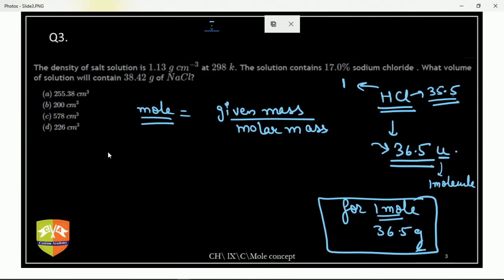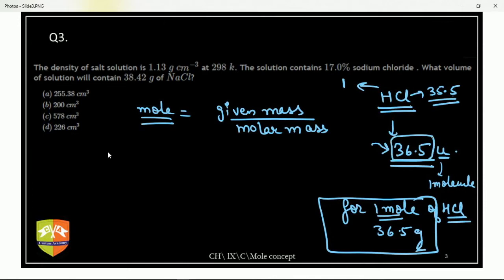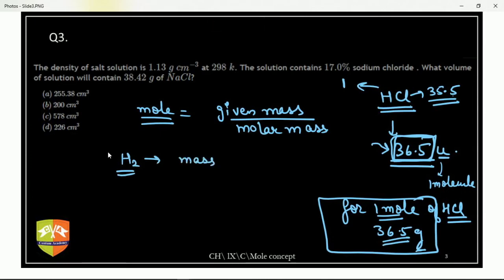36.5 grams is for one mole of HCl, because one molecule of HCl is 36.5 U. Now, a simple question: what is the mass of one mole of H2? For one molecule of H2, it is 2 U, so for one mole it is 2 grams. And what is the mass of one molecule of O2?